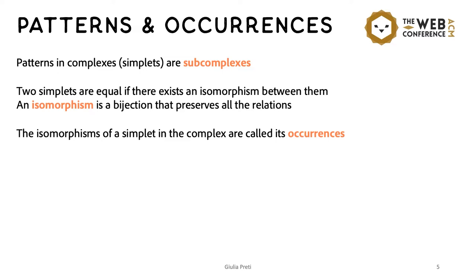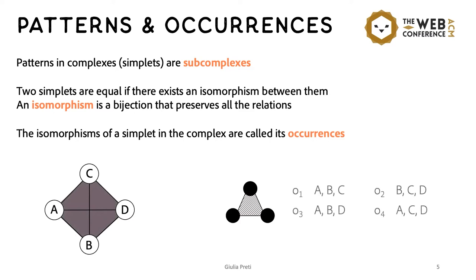A sub-complex is an occurrence of a simplet if there is a mapping from its nodes to the nodes of the simplet, such that all the memberships to the simplets are preserved. So, as an example, given this tetrahedron and this simplet, this triangle, we have that each triangle that we have in the complex is a valid occurrence of the simplet.